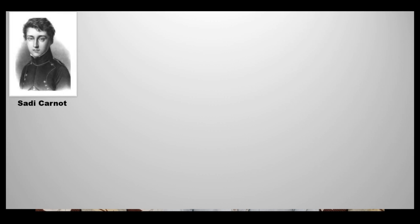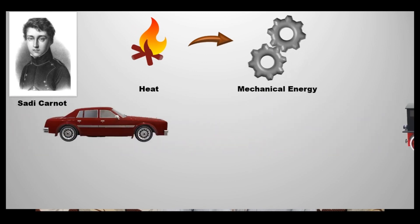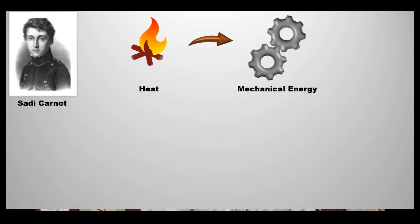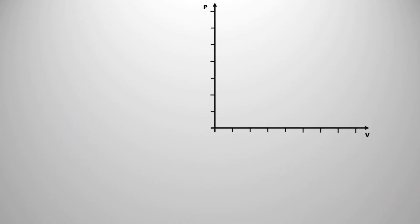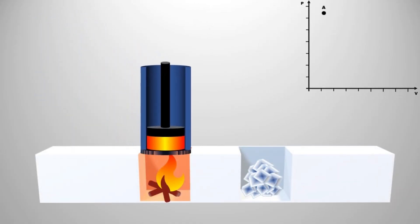Thank you Akash. Now let's discuss the Carnot cycle. What is the Carnot cycle? The Carnot cycle is an idealized thermodynamic cycle that serves as a standard for measuring the efficiency of heat engines. It is not specific to any particular engine type but provides a theoretical framework for understanding how heat can be converted into work. As you can see in the figure, the Carnot cycle consists of four reversible processes.